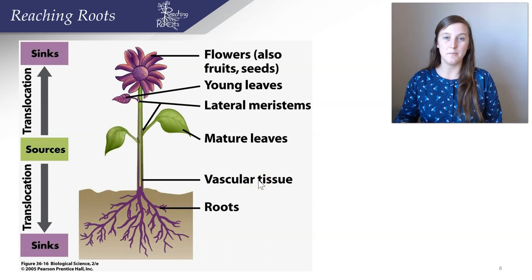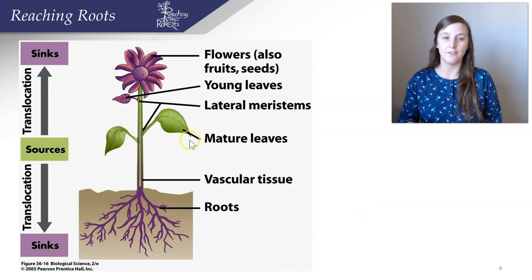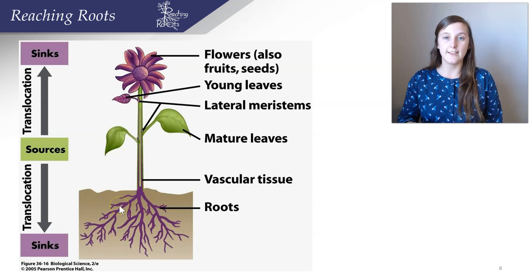Seasons affect plants in many ways, one of which is where the plant gets their sugars and carbohydrates. For example, during the summer, the plant is photosynthesizing, usually at very high rates. That sugar can be used to produce flowers and fruit, and also develop roots. In the fall, many plants become dormant. Before the plant becomes dormant, all the sugars produced in mature leaves are going to be stored in the roots.